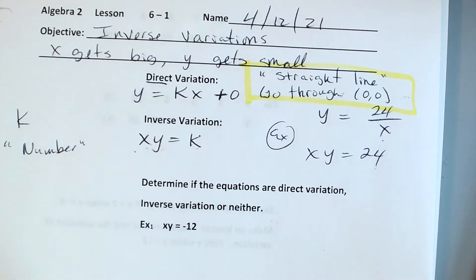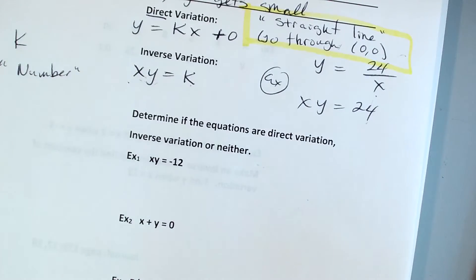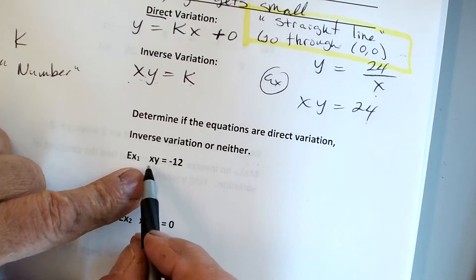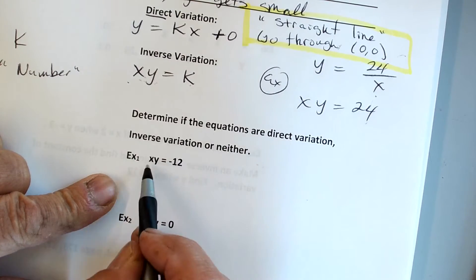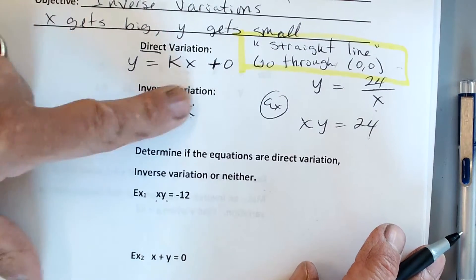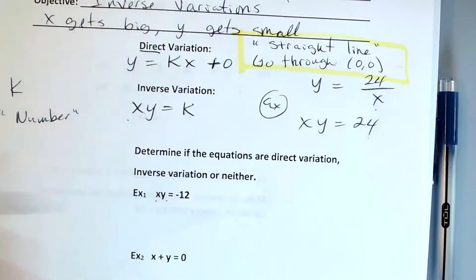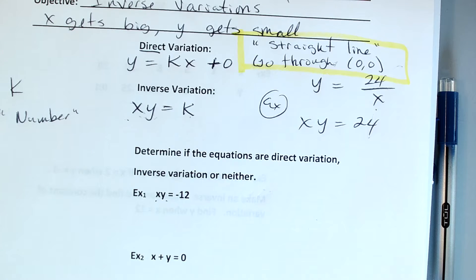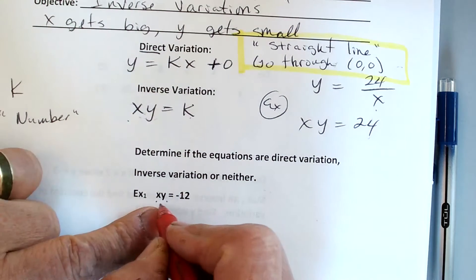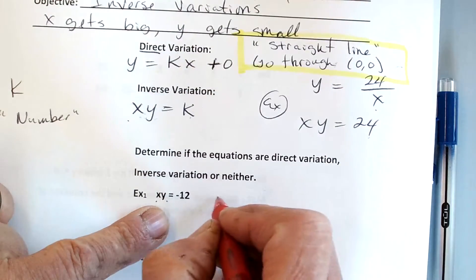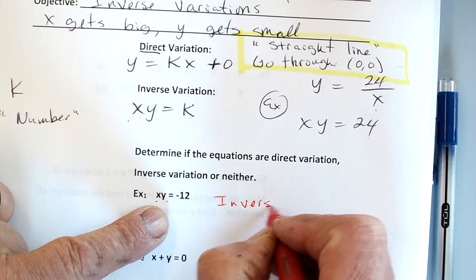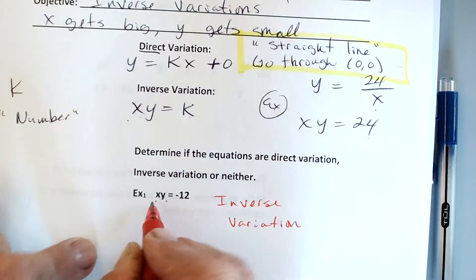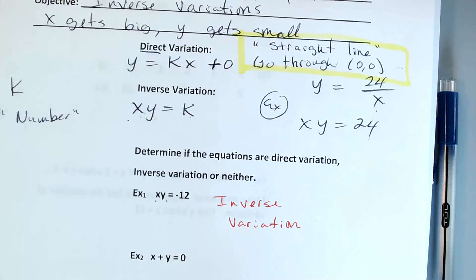So let's take a look at whether these are direct variations or inverse variations. Number one: that's got to be inverse. We see xy equals a number. See that xy? That has to be that one right there, inverse variation.